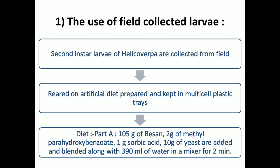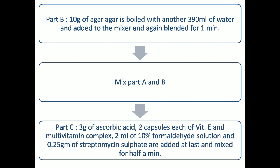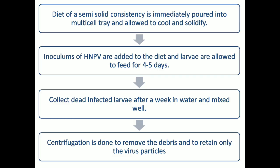For Part A of the diet, the contents are mixed in 390 ml of water in a mixer for 2 minutes. For Part B, 10 grams of agar-agar is mixed with another 390 ml of water and blended for 1 minute. Mix both Part A and Part B together. For Part C, add 3 grams of ascorbic acid, 2 capsules of vitamin E and multivitamin complex, 2 ml of 10% formaldehyde solution, and 0.25 grams of streptomycin sulphate — these are added last and mixed for half a minute. The diet is semi-solid and is immediately poured into the multi-cell tray and allowed to cool and solidify. Then add the inoculum of virus, that is HNPV, to the diet.